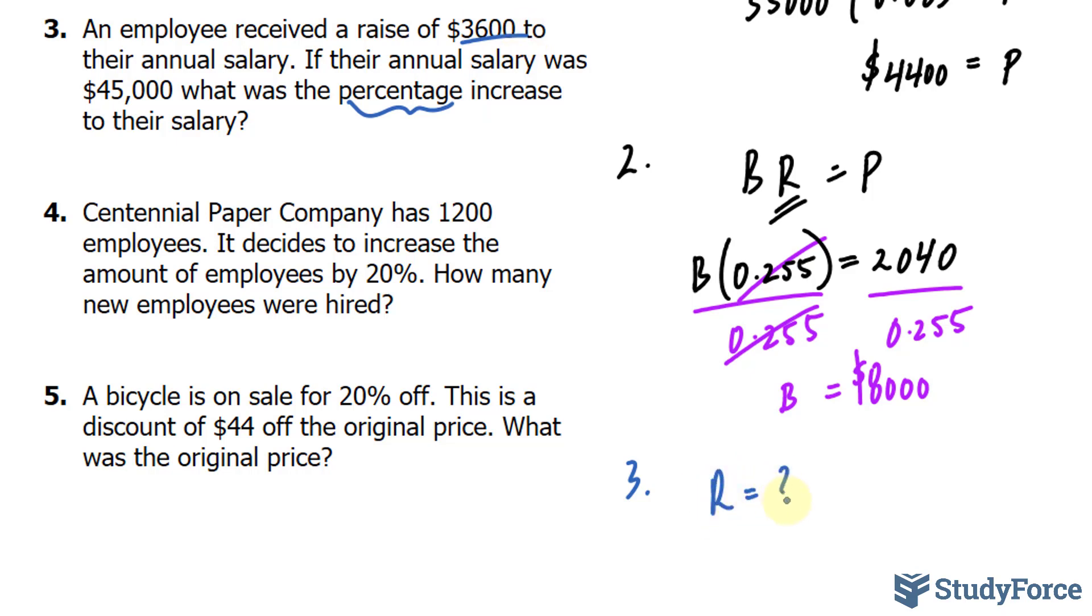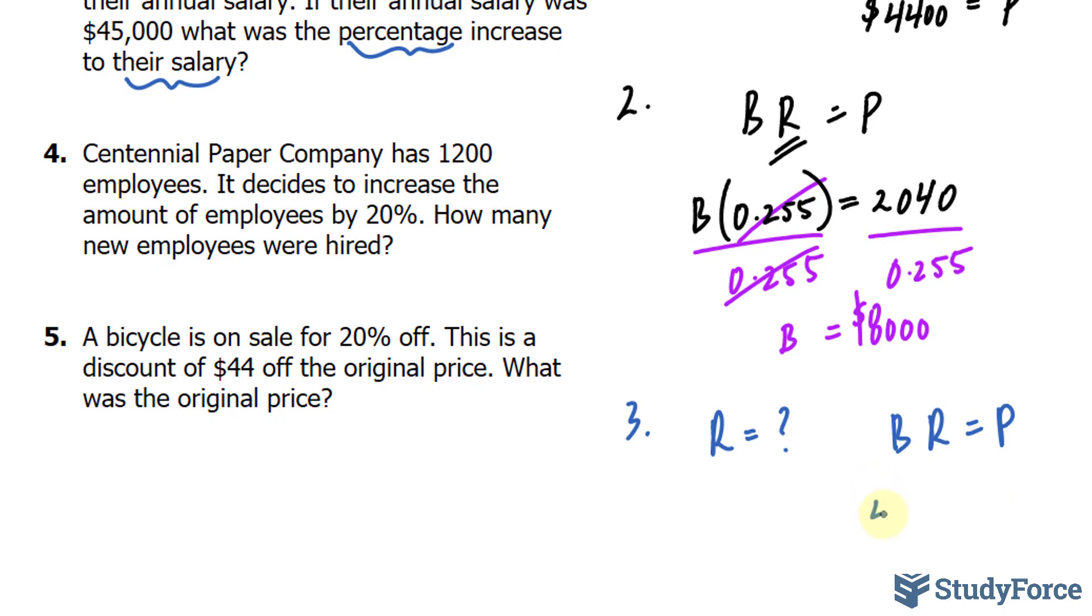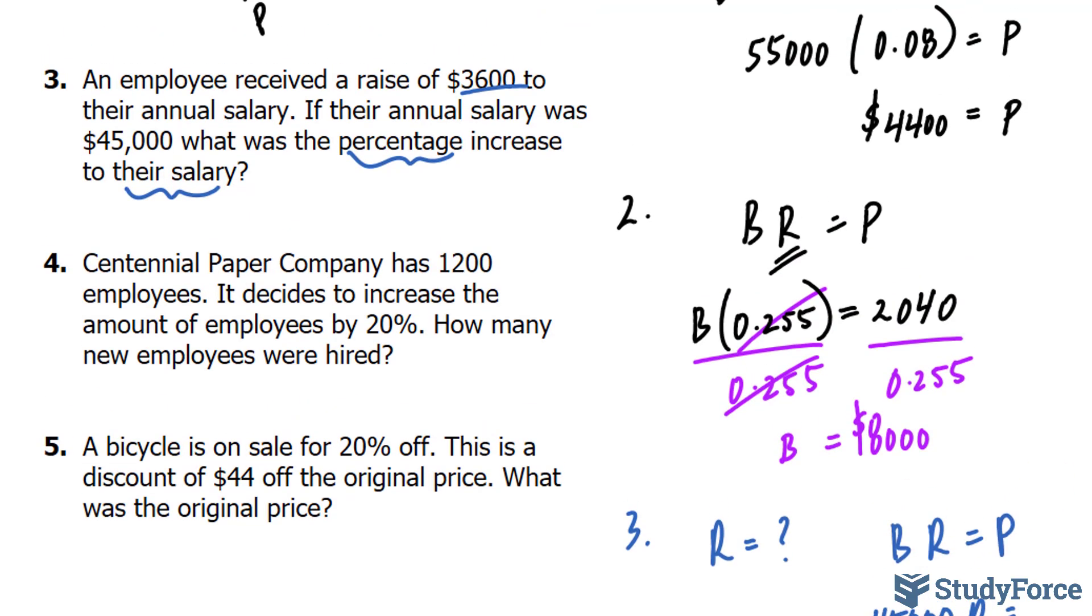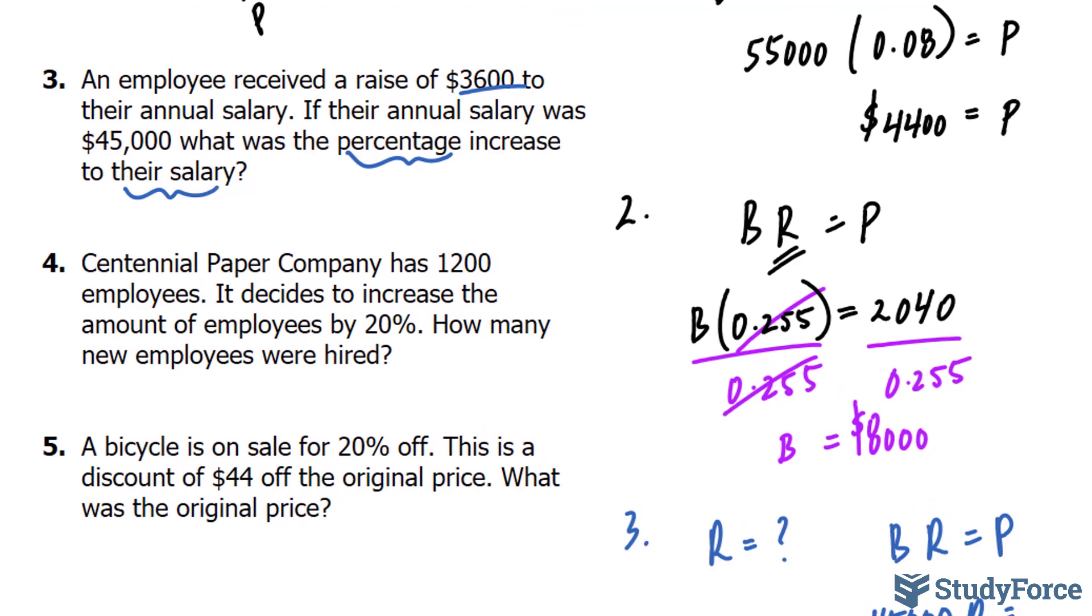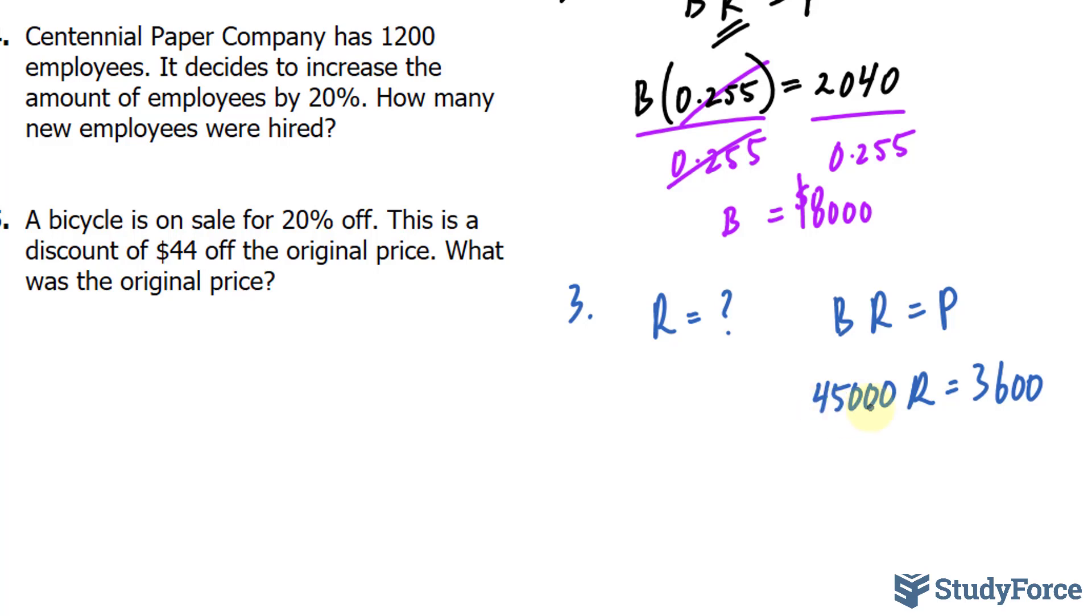What it's asking for is the percent of the original salary that will lead to a raise of $3,600. So it is R that we're looking for here. And we have to determine which of these two numbers, if we're using the formula BR is equal to P, we have to determine which of these two represents B and P because R is what we're looking for. And if we have a percentage of their original salary, and their original salary happens to be $45,000, the $45,000 represents the base value. That gets multiplied to R. And by deductive reasoning, we can say that the portion is $3,600.